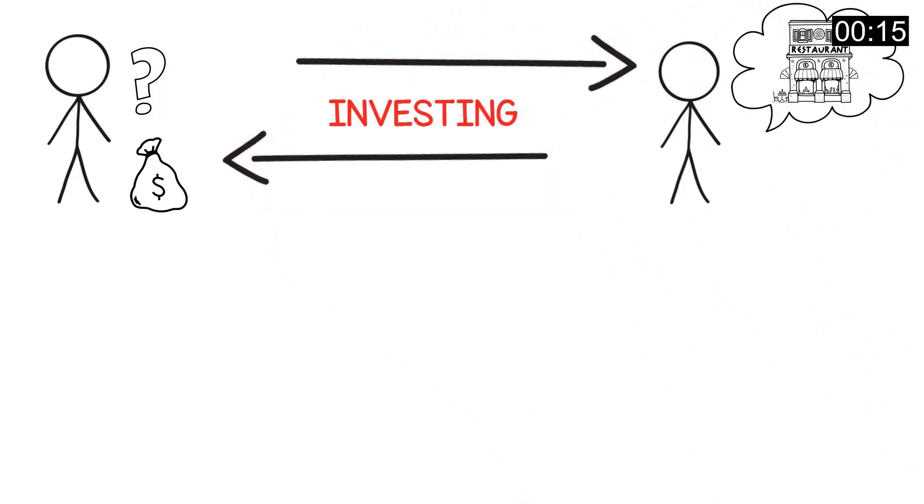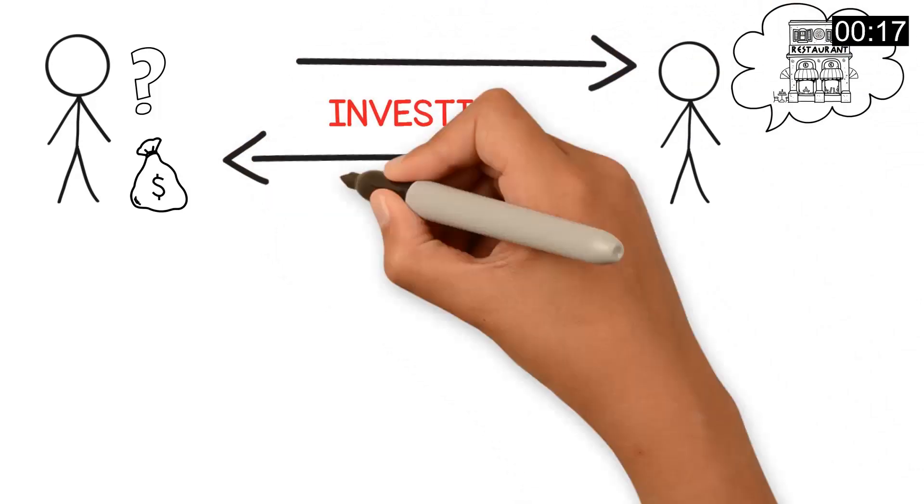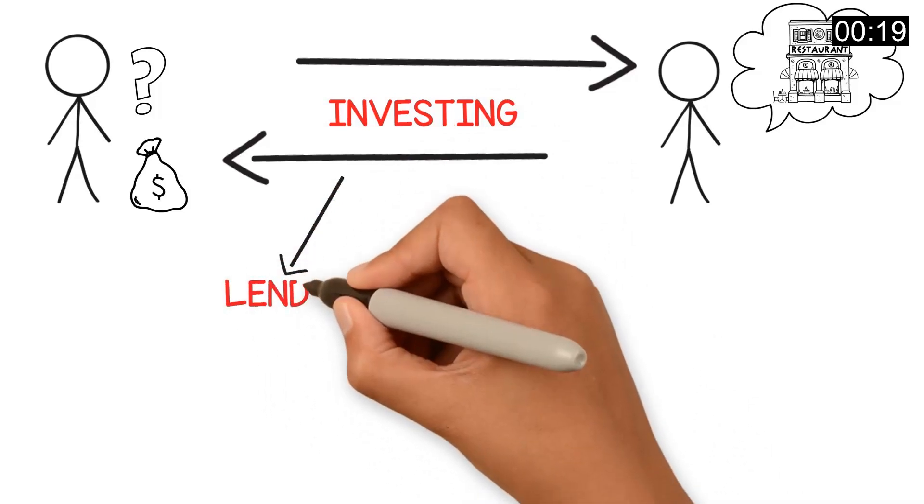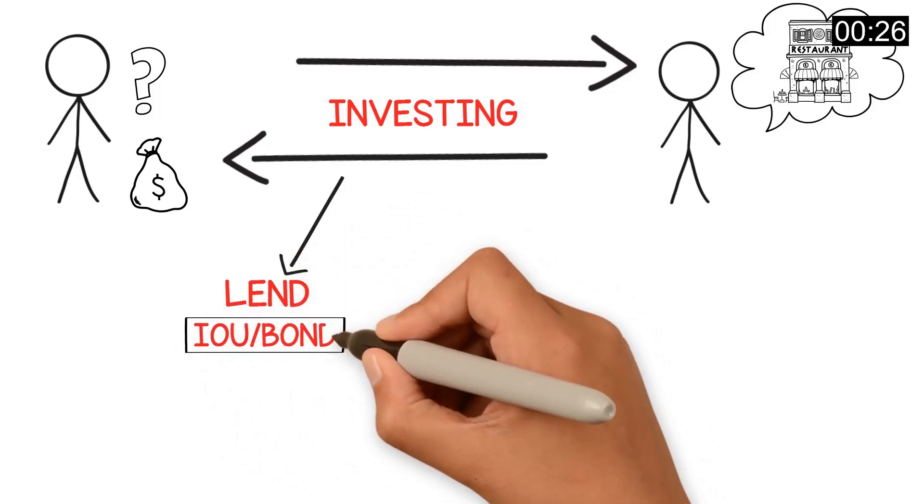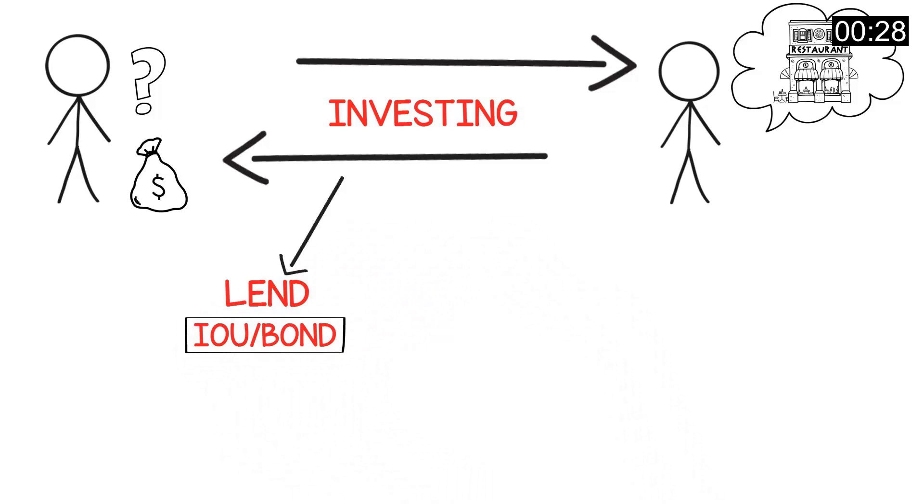This is investing. Now you can lend it to him. This is called investing in debt. You give him a million rupees, he gives you an IOU or a bond promising to repay the money with interest.